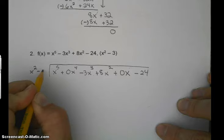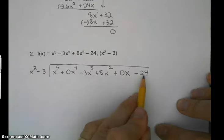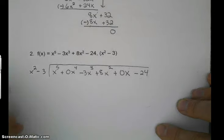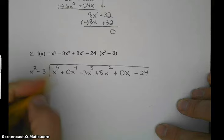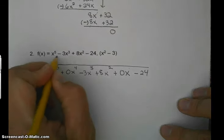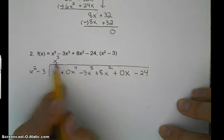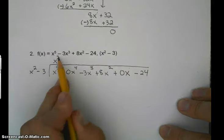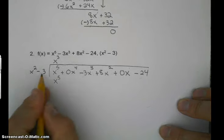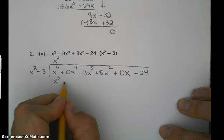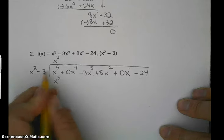Here's our factor, x squared minus 3. We want to see if that goes into this evenly. So let's start off. x squared times what is x to the 5th? If we remember our rules of exponents, we should know it's x cubed, because 2 plus 3 is 5. Negative 3 times x cubed is negative 3x cubed.